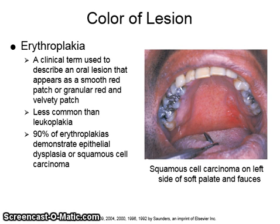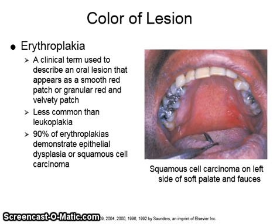Erythroplakia is a clinical term used to describe an oral lesion that appears as a smooth red patch or granular red and velvety. It is less common than leukoplakia, and 90% of erythroplakias demonstrate epithelial dysplasia or squamous cell carcinoma. The image on the right shows a squamous cell carcinoma on the left side of the soft palate and the fossae.